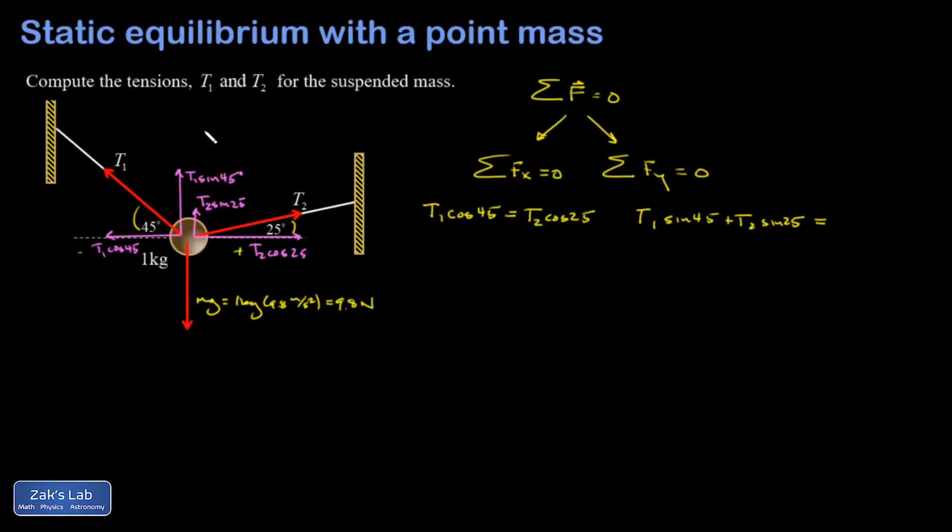So the sum of these two upward components better add up to the same magnitude as gravity pulling downward, which was 9.8 newtons. Now I have a system of two equations and two unknowns, so in principle I'm done with the problem. It's just a matter of doing a little bit of algebra.